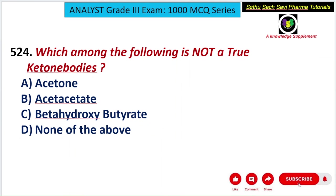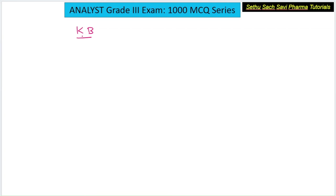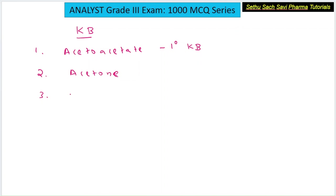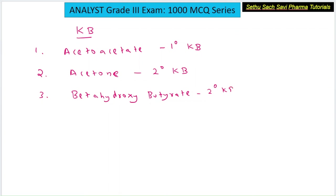This question is from biochemistry: which of the following is not a true ketone body? Ketone bodies are energy-releasing molecules. There are mainly three ketone bodies: acetoacetate (the primary ketone body), acetone (derived from acetoacetate, a secondary ketone body), and beta-hydroxybutyrate (also derived from acetoacetate, also a secondary ketone body).